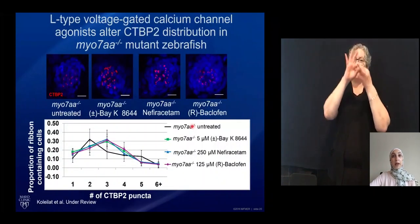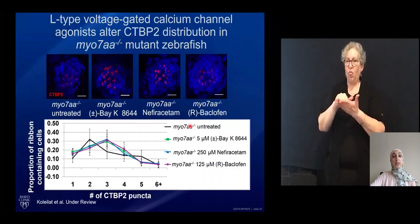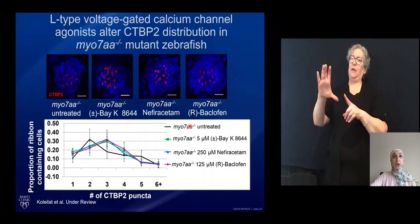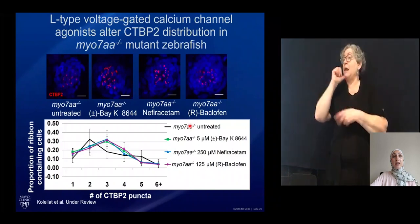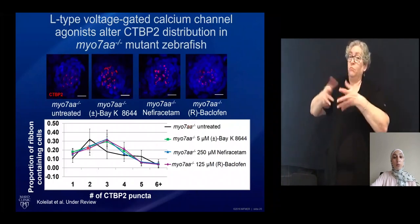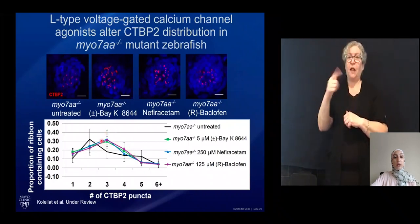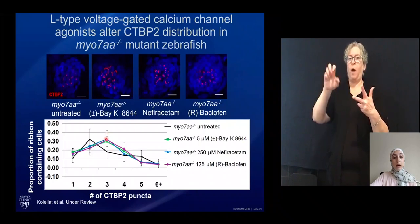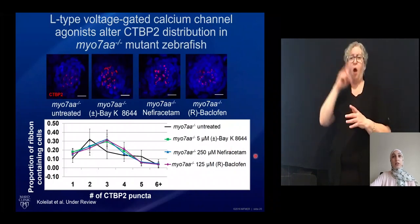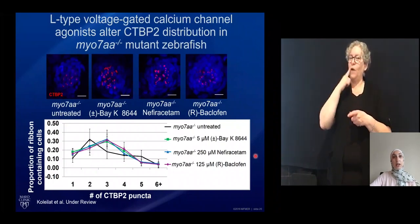We also assessed the synaptic ribbon by labeling with a CTBP2 antibody — the gene alternatively spliced to produce the principal protein component of synaptic ribbons. As I showed earlier, a majority of untreated myo-7a mutant hair cells have two CTBP2 puncta. However, upon incubation with all three compounds, there is a shift so that a majority of hair cells have three CTBP2 puncta per hair cell — an important finding showing that hair cells respond to pharmacologic treatment in the regulation of CTBP2, which is essential for the transfer of sound information to the auditory nerve.